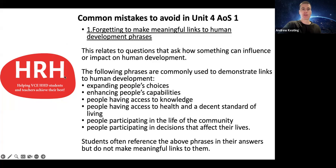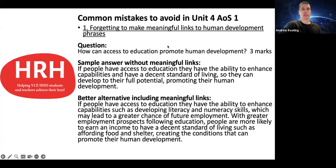Some examples of phrases from the human development definition include: expanding people's choices, enhancing people's capabilities, people having access to knowledge or health, and a decent standard of living. These are the phrases you should have in your notes heading into your end-of-year exam. For a three-mark question asking how access to education could promote human development, you'd want to use at least two or three of those key phrases as part of your answer.